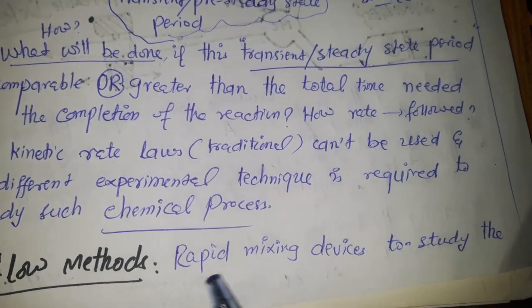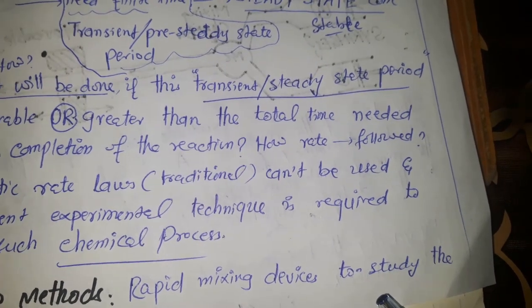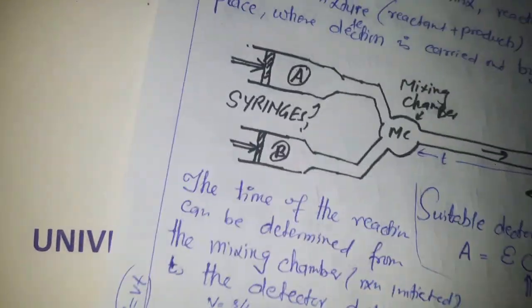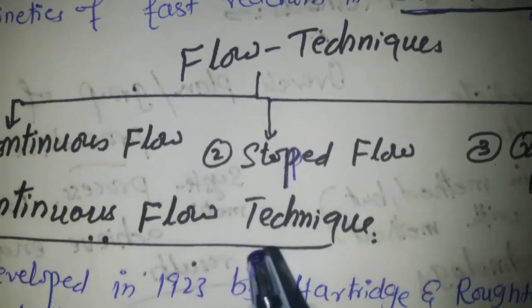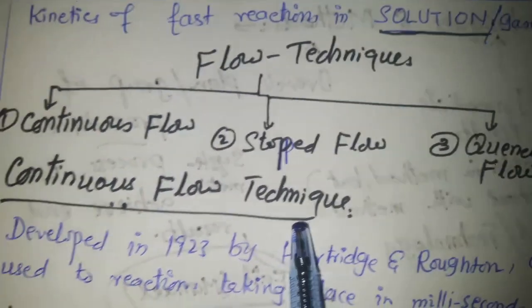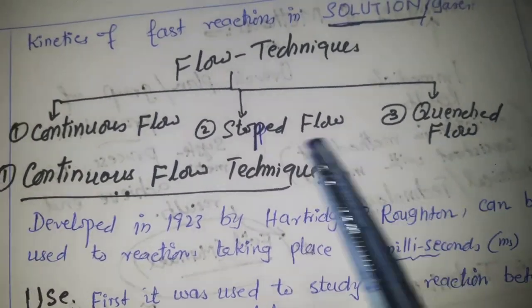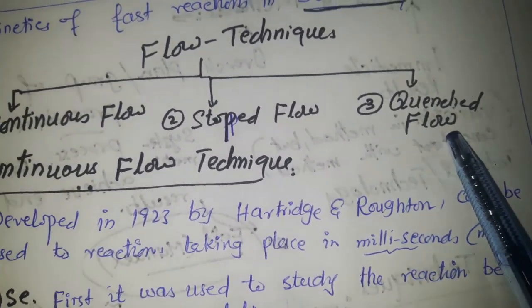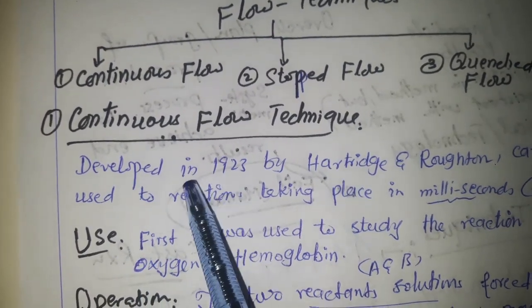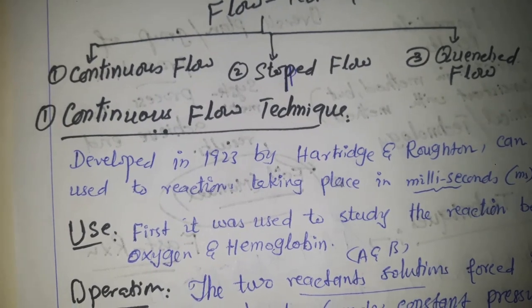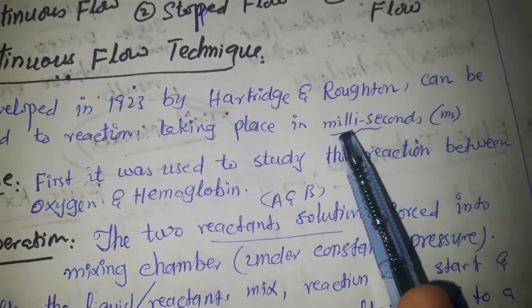Among the advanced techniques needed, we are going to discuss the flow method. The flow method is a combination approach using rapid mixing devices to follow the kinetics of fast reactions in solution or even in the gaseous state. There are different types of flow techniques: the continuous flow technique, the stopped-flow technique, and the quenched flow technique.